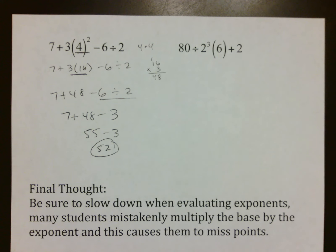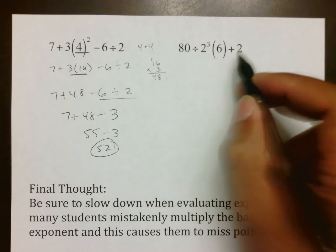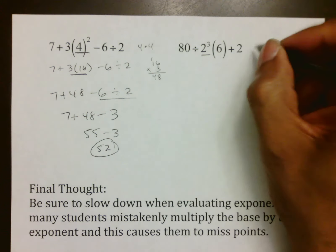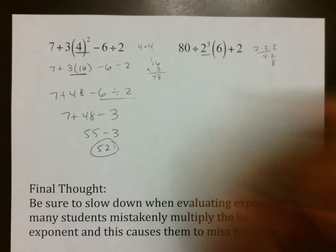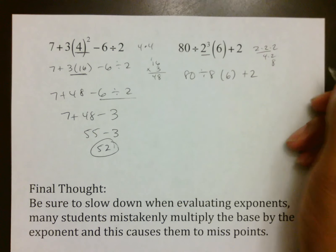And then the last example of the day. 80 ÷ 2³ × 6 + 2. The first thing I notice is this weird little three floating there, the exponent. And so I go off to the side and expand it. That's 2 × 2 × 2, or 8. So 80 ÷ 8(6) + 2.